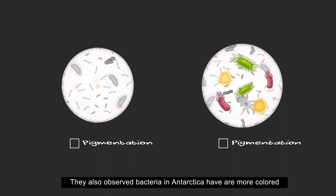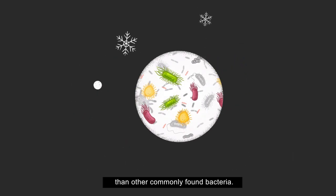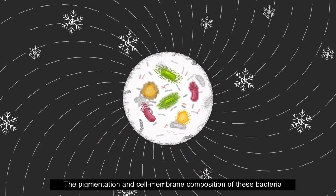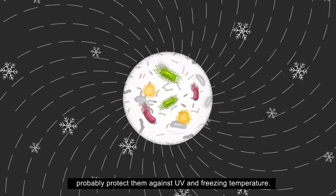They also observed bacteria in Antarctica are more colored than other commonly found bacteria. The pigmentation and cell membrane composition of these bacteria probably protect them against UV and freezing temperatures.